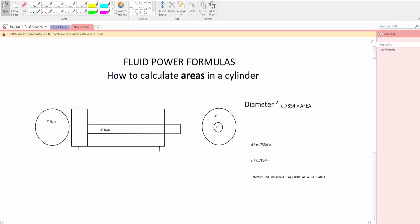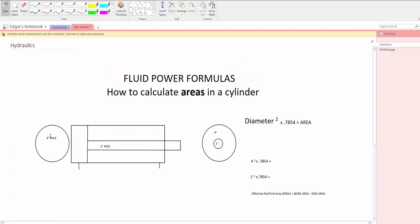So anyway, let's assume that we have a 4 inch bore cylinder and a 2 inch rod cylinder. So the way that you do it is diameter squared times 0.7854.